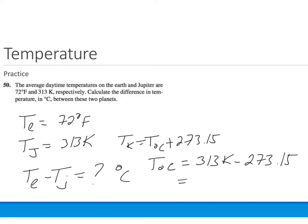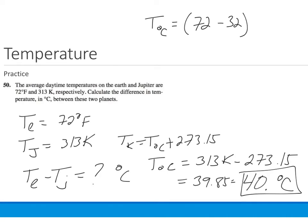We get 39.85, which in the correct number of significant figures is 40 degrees C. The temperature on Earth in degrees C equals 72 degrees Fahrenheit minus 32 times 5 degrees C for every 9 degrees Fahrenheit, and that gives us an answer of 22 degrees C.